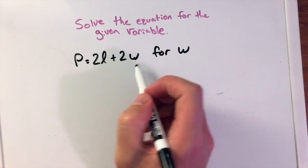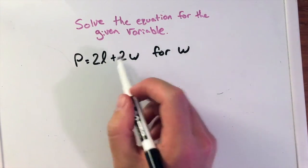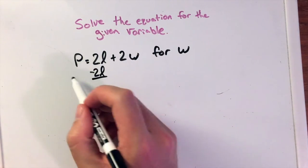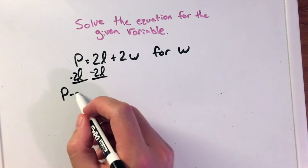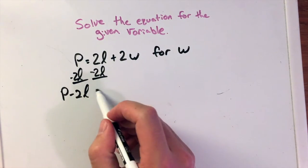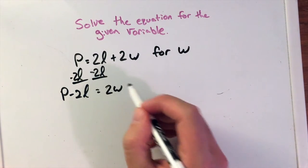So first let me get 2W by itself, or W by itself. We're going to see the addition here so let's subtract 2L to both sides. And we have P minus 2L. Again, they are not like terms because not the same variable. Equals 2W.